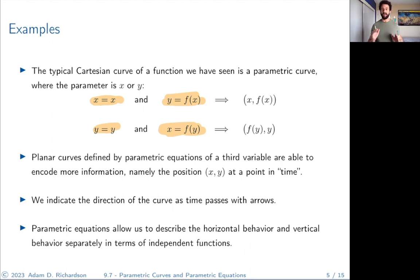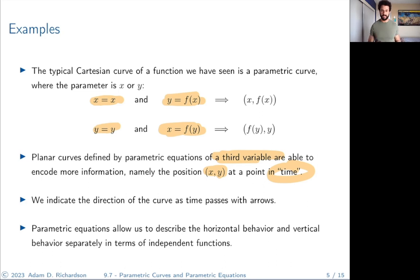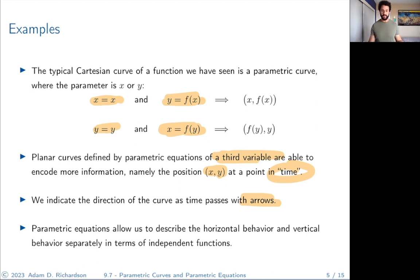One of the nice things about parametric equations and not being tied to that horizontal input is that we can describe more interesting curves. Planar curves defined by parametric equations of a third variable encode more information — they can encode the position of a point at a certain time. When we want to indicate which direction the point is moving, we use a little arrow on the curve.